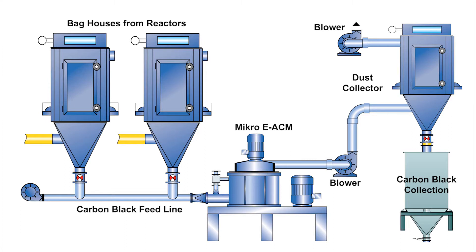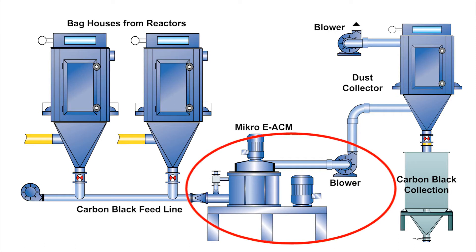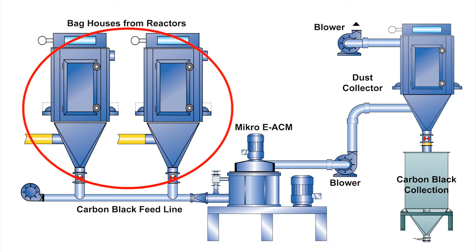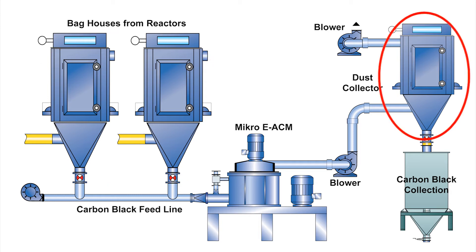The EACM can be installed inline into existing processes, as well as offline processes. For the retrofit into existing processes, the mill, in addition to a material handling fan, can be installed between the filters from the reactor and the primary bag filter. The reason for the additional material handling fan is to account for the increased pressure drop from the EACM.